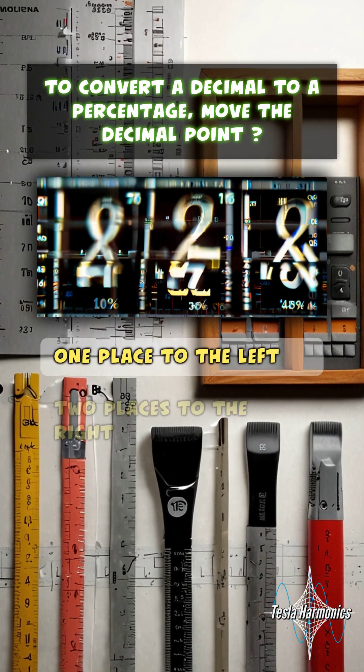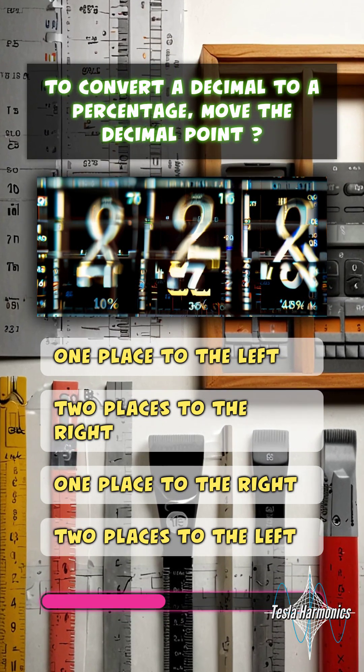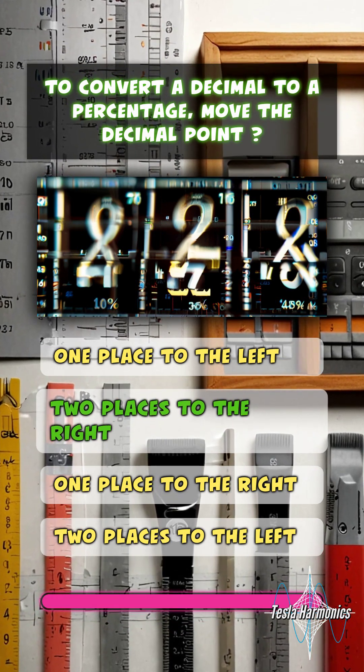To convert a decimal to a percentage, move the decimal point two places to the right.